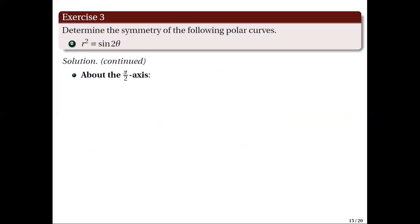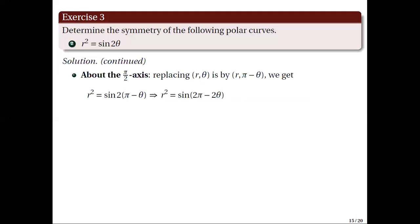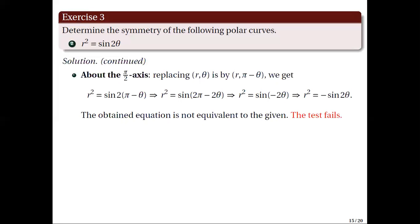In testing symmetry about the pi over 2 axis, by making the following replacement, we get r squared equal to sine of 2 times the quantity pi minus theta, which is equivalent to r squared equal to sine of the quantity 2 pi minus 2 theta. Using the property that sine is a periodic function, this is equivalent to r squared equal to sine of negative 2 theta. Since sine is an odd function, this is equivalent to r squared equal to negative sine 2 theta. The obtained equation is not equivalent to the given, hence the test fails.